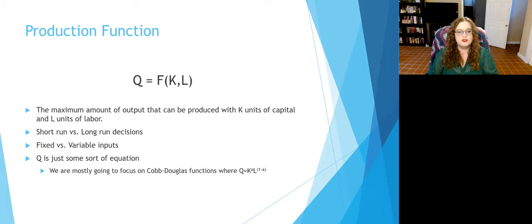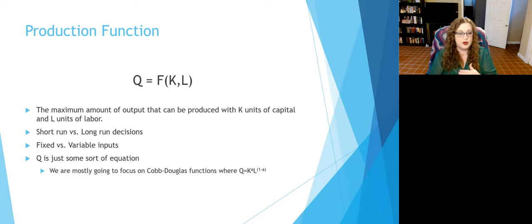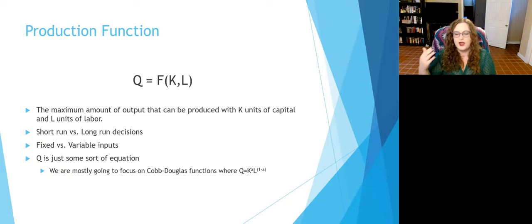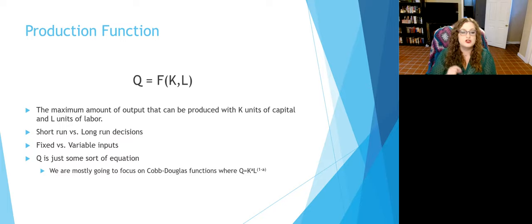We also have fixed and variable inputs. Capital cannot be changed in the short run, so we say it's fixed — we have a fixed amount of kilns and pottery wheels. Variable means something we can adjust, such as asking employees to stay later. In this class, we're going to assume capital is fixed in the short run and labor is variable in the short run — a clear way to work through everything without getting confused about short and long run differences.